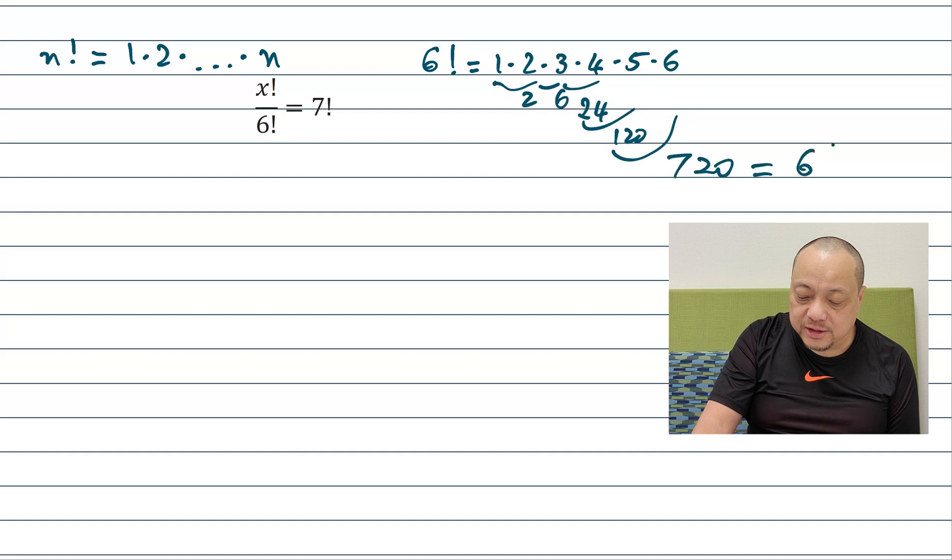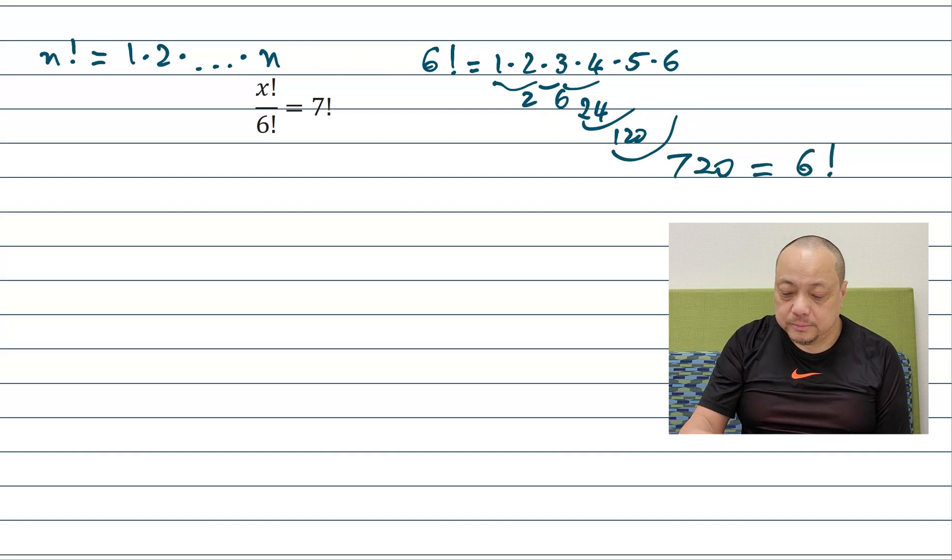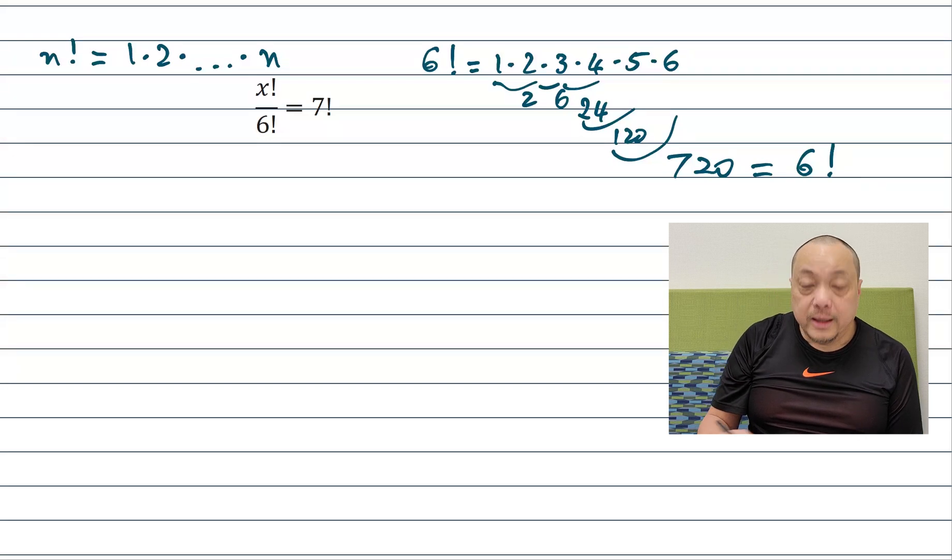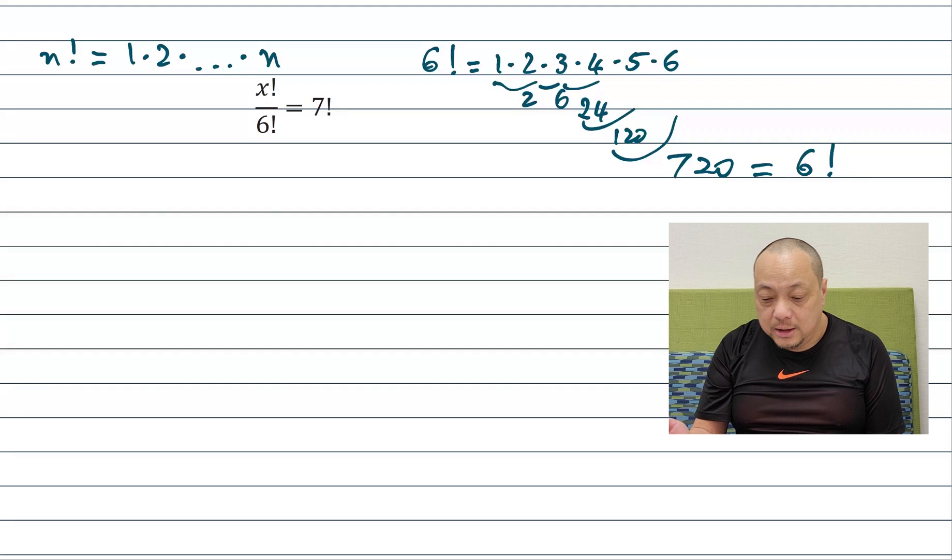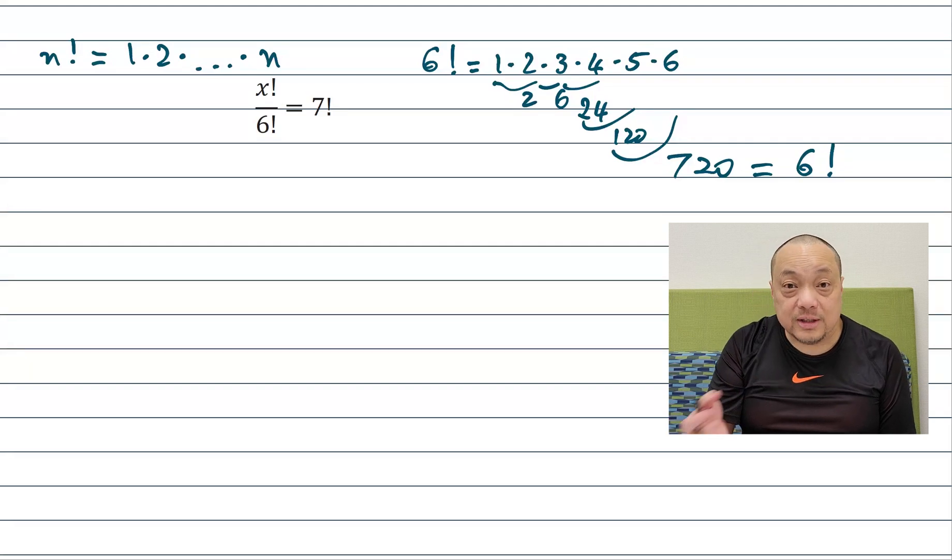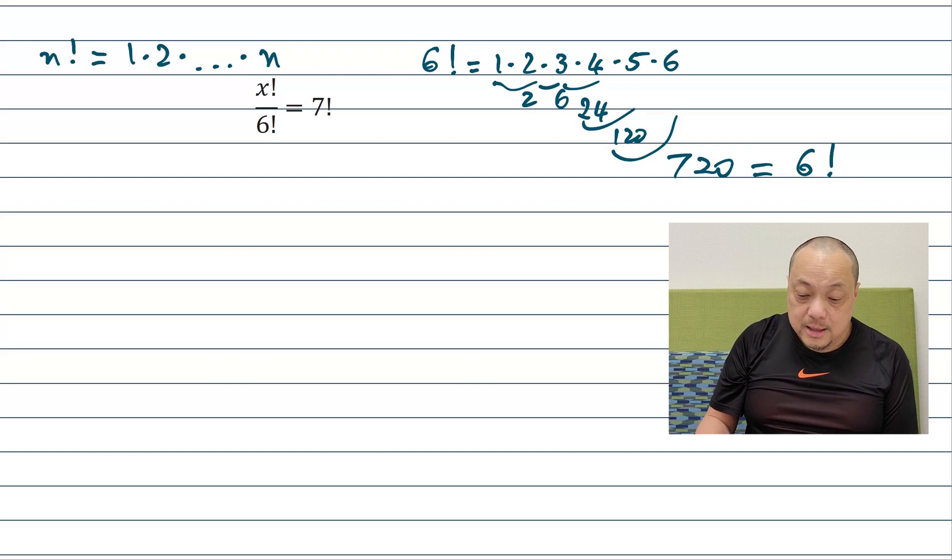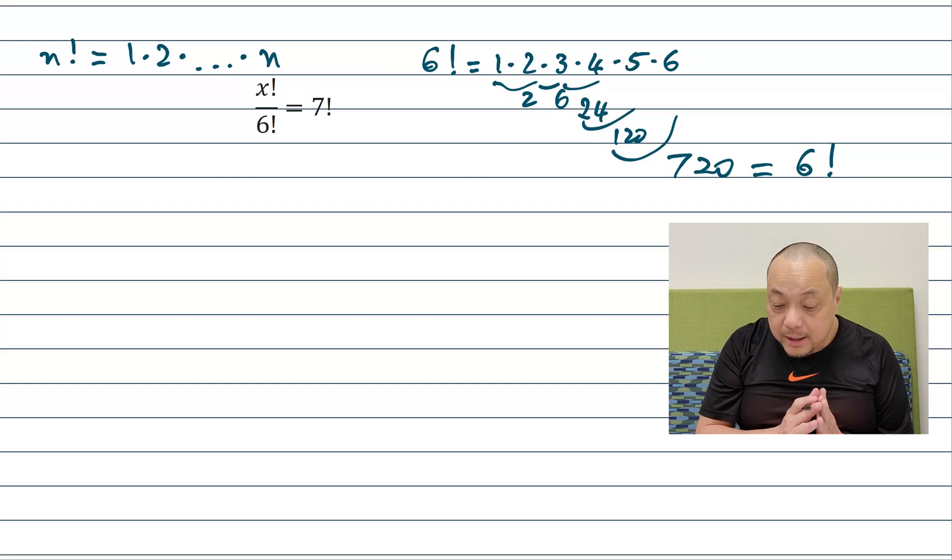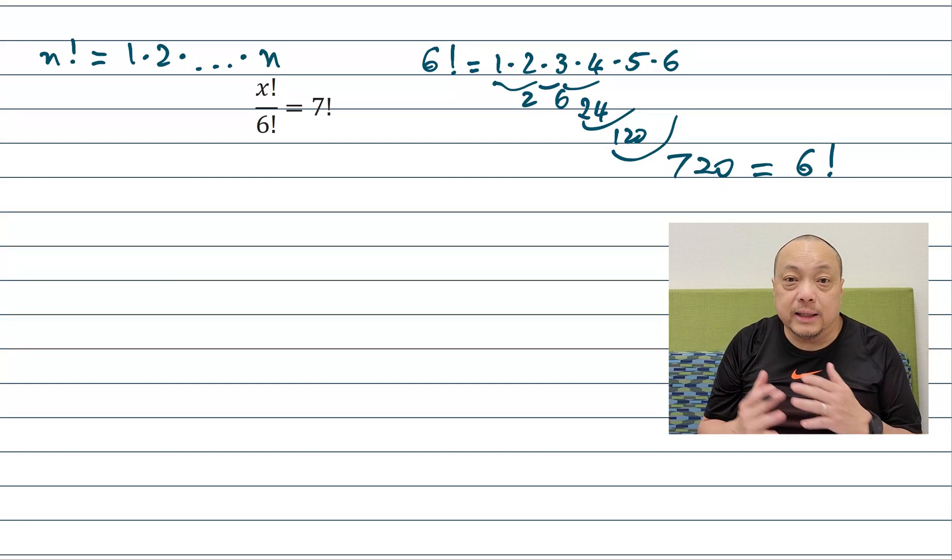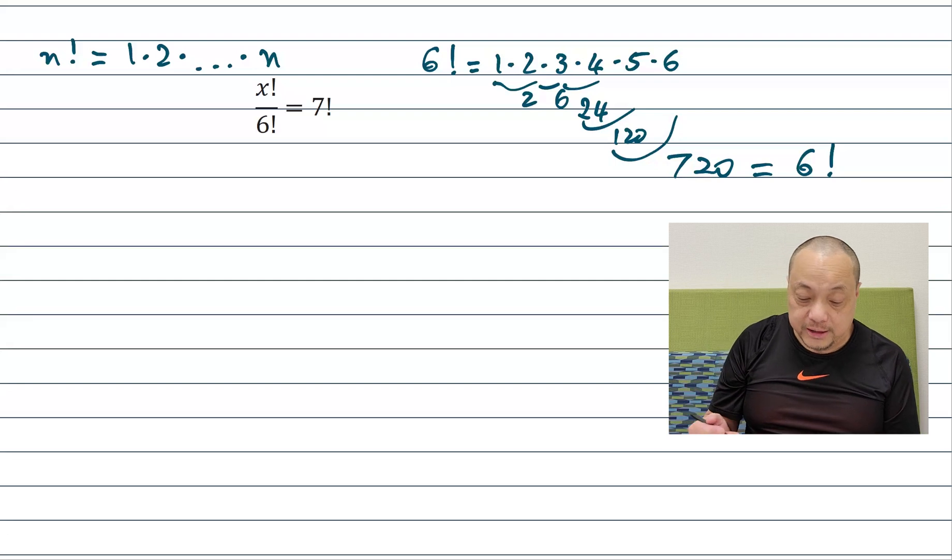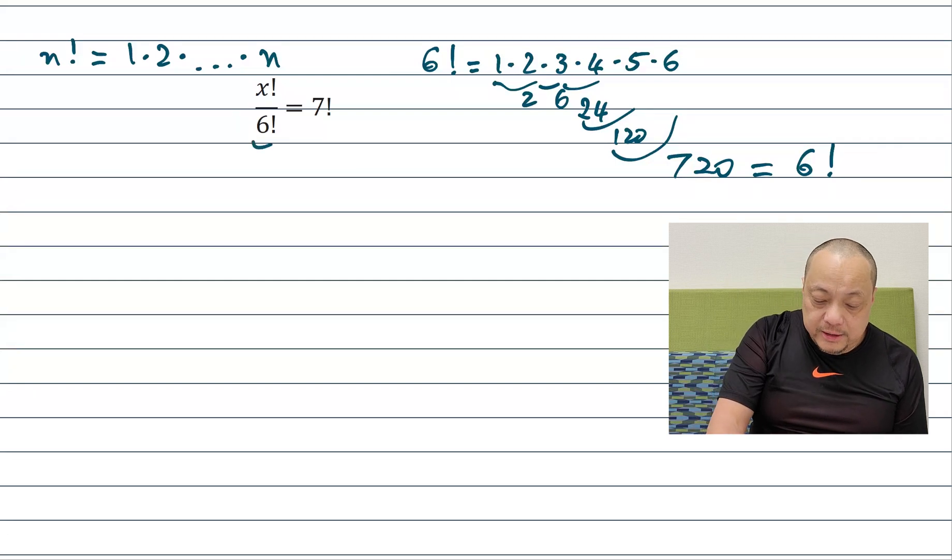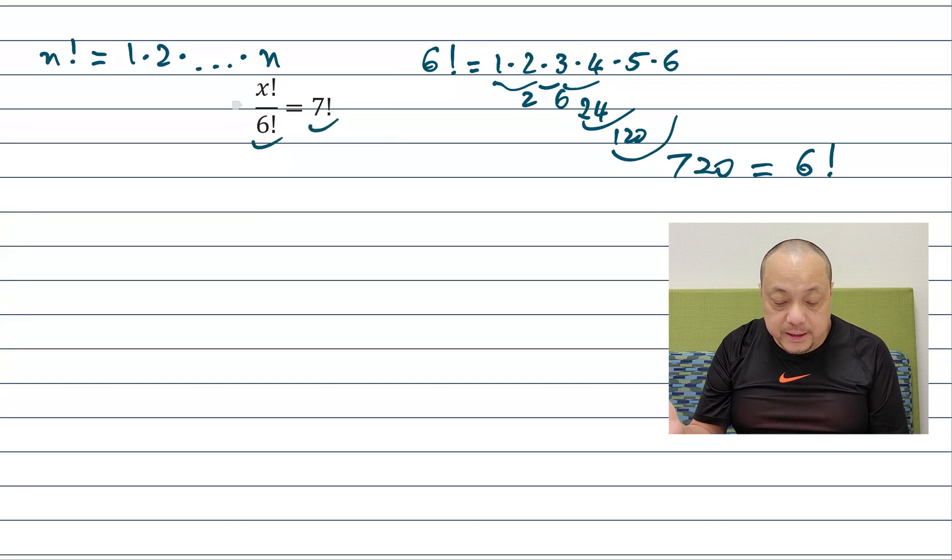So 6 factorial is equal to 720. And then 7 factorial is going to be 1, 2, 3, 4, 5, 6, 7. So it's actually just take the 720 which is the first 6 and then multiply by 7. And so for a small number like 5, 6, 7 we can do it by hand. For a larger number we probably want to get a computer calculator to do it.